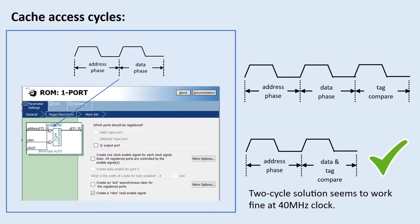So the best case, when I have a cache hit, it will just be like I'm reading from a regular on-chip memory with two cycle latency.